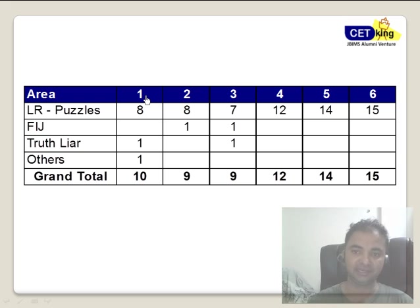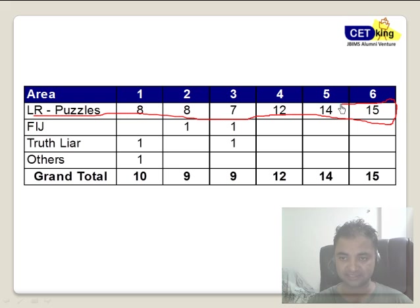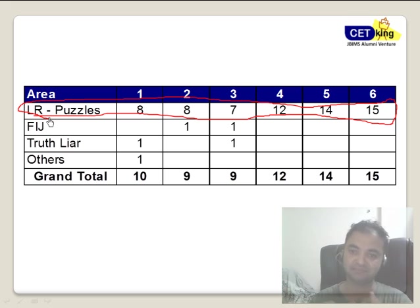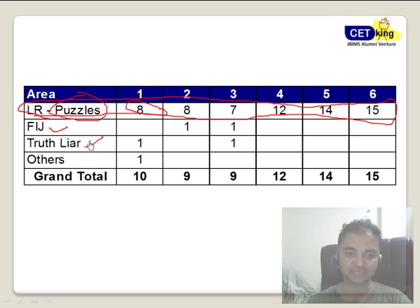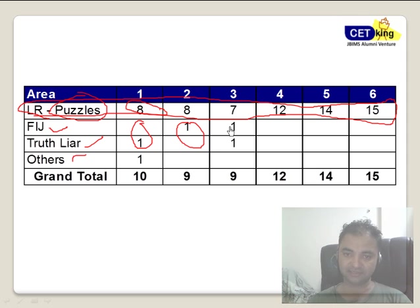Looking at the LR section in detail: there will be 8 questions based on puzzles — that's the best part of CAT. Compare it to NMAT, SNAP, XAT, IIFT — there are lots of LR question types — but for CAT, there's only one main type: logical puzzles. So 8 questions out of LR, and maybe one question on FIJ, truth-liar, or something else. Looking at the last two papers, there are only a couple of such questions.